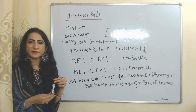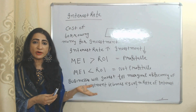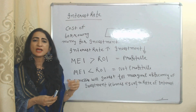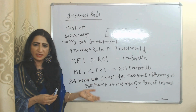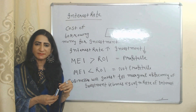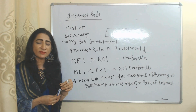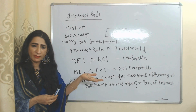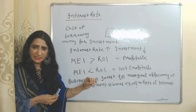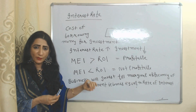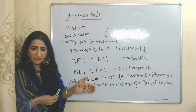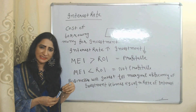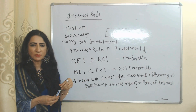The second determinant of investment is interest rate. The cost of borrowing money for investment purposes is called the interest rate. Interest rate and investment have an inverse relation: if the interest rate increases, the cost of borrowing money increases, and as a result investment falls. If the interest rate falls, the cost of borrowing money falls, and that's why investment increases. So interest rate and investment have an inverse relation.